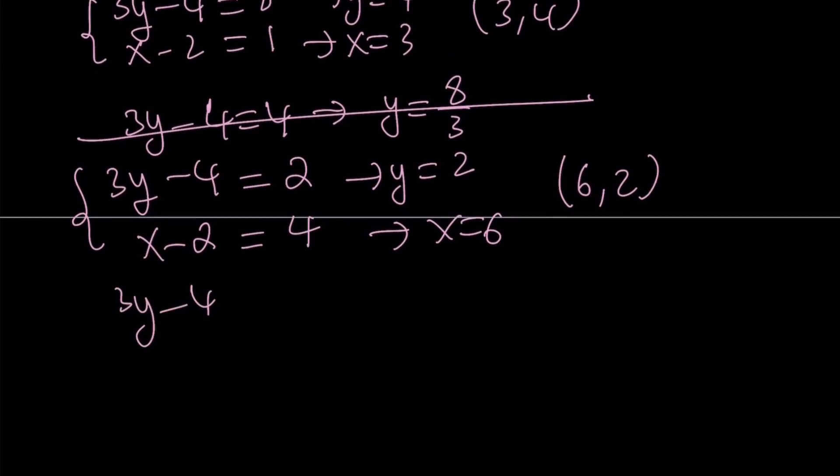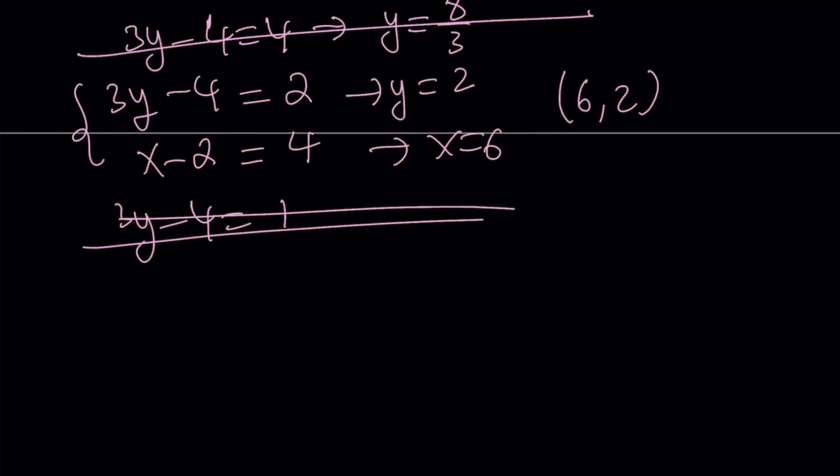If 3y minus 4 becomes 1, this doesn't give us an integer solution. So we're going to skip that. So we're done with the positives. Let's go ahead and go through the negatives.